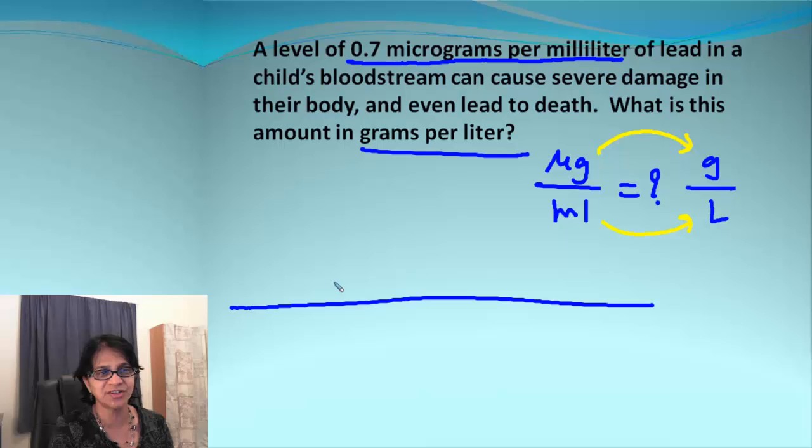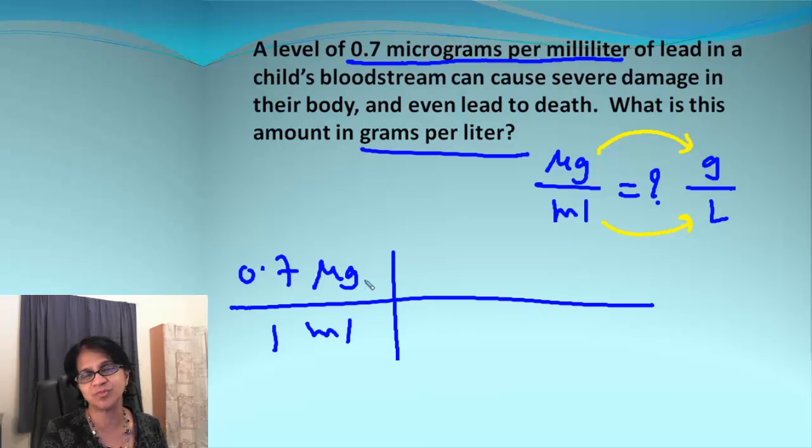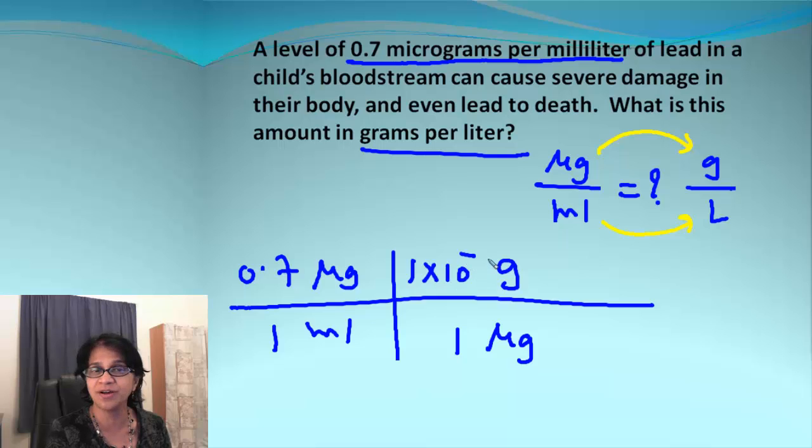So just following the directions which we have, we begin with the given which is 0.7 microgram per 1 milliliter and now we can begin with either one. I always like to begin with the numerator. So I am going to go from microgram to gram and if you remember our table in the previous video, we can just go and complete that into one step. So if I do microgram, I can jump over and go to grams and the coefficients will be 1 microgram equals, this is the value which we get for gram. Micro is negative 6. So there we go. We are already done converting from microgram to gram because if we cancel this, we are left with grams.